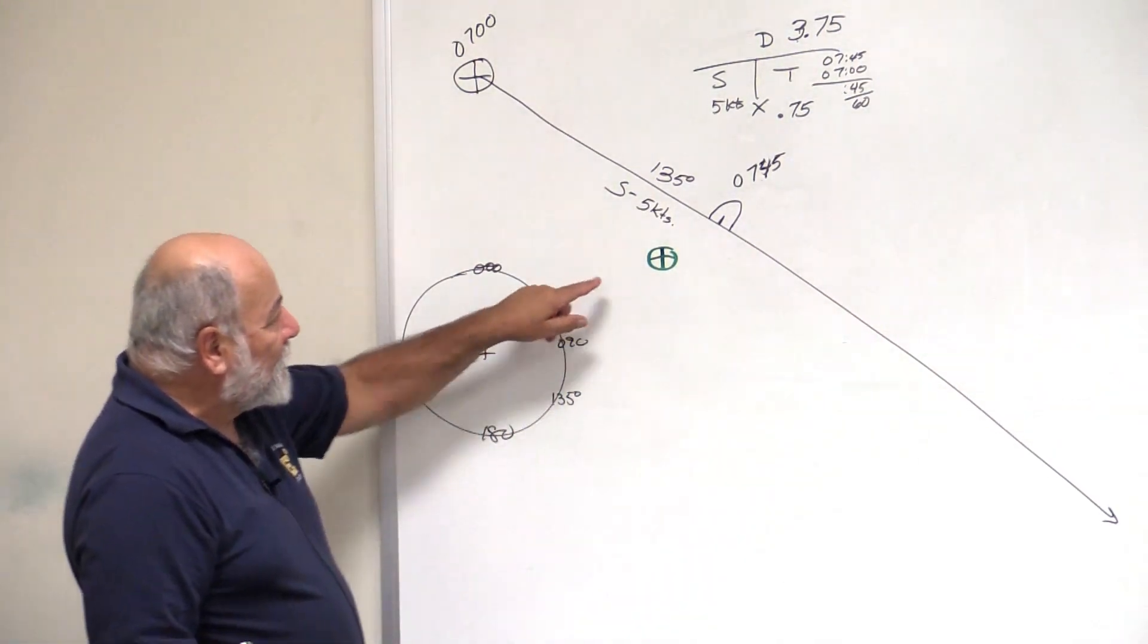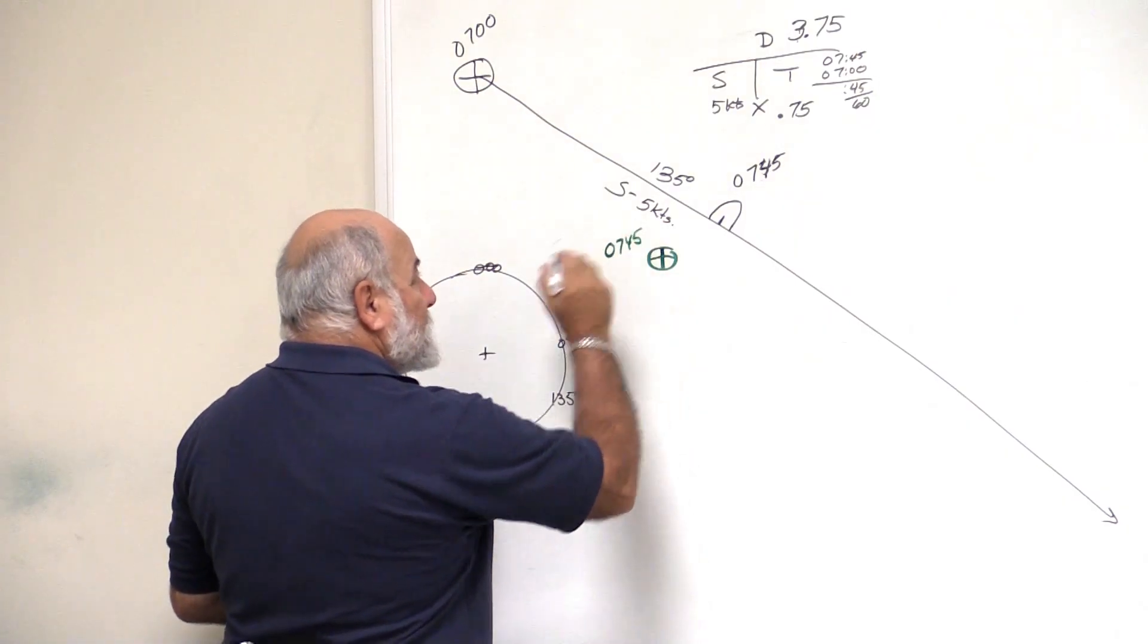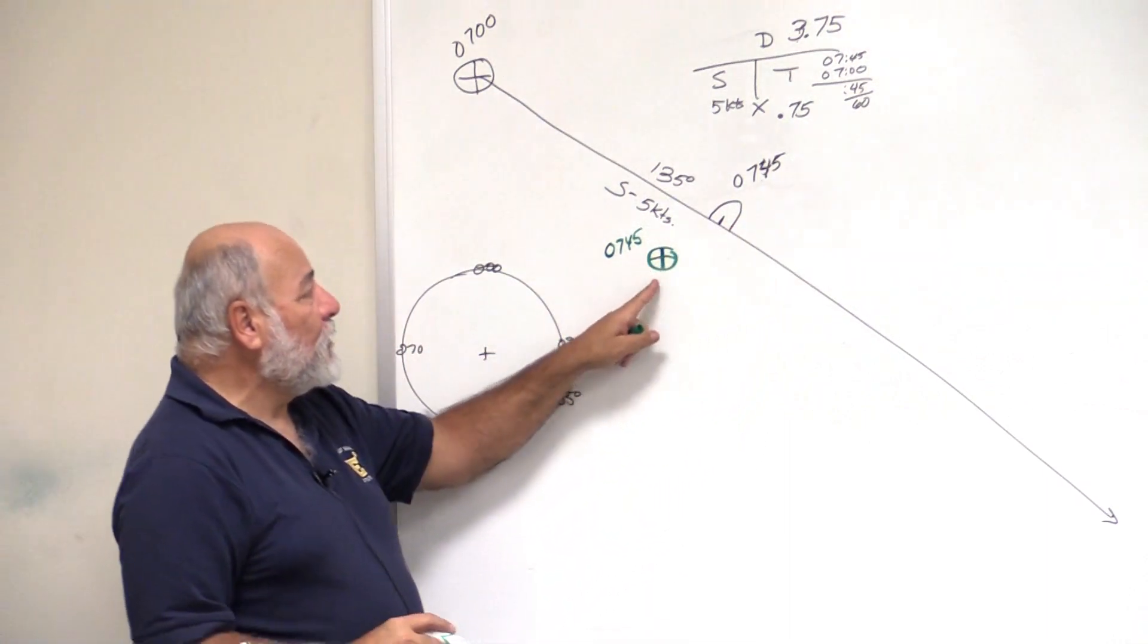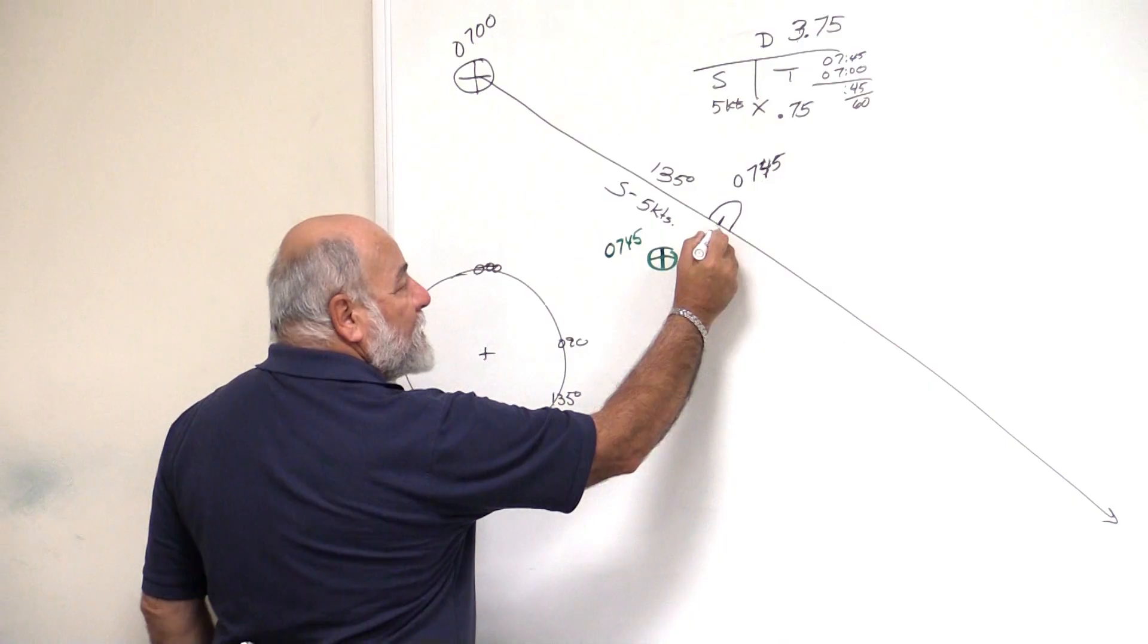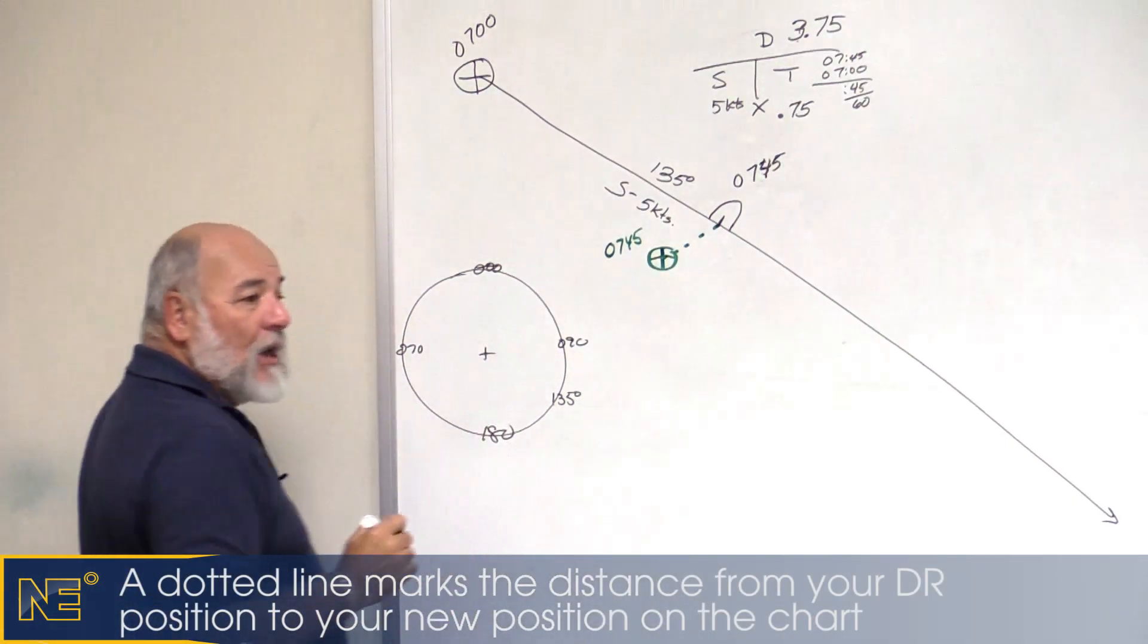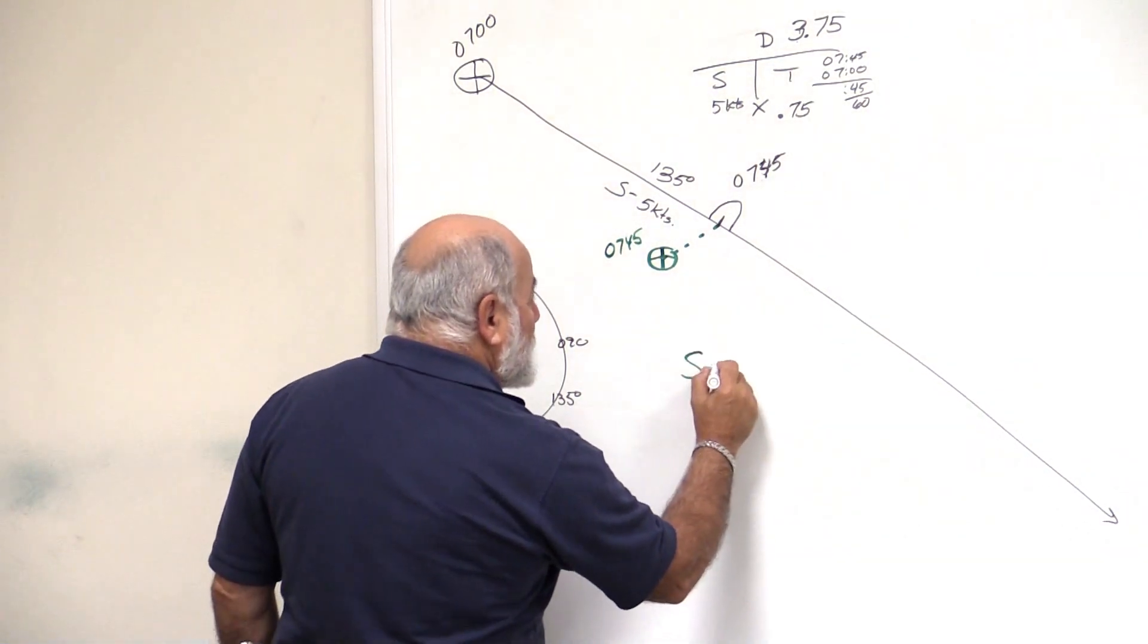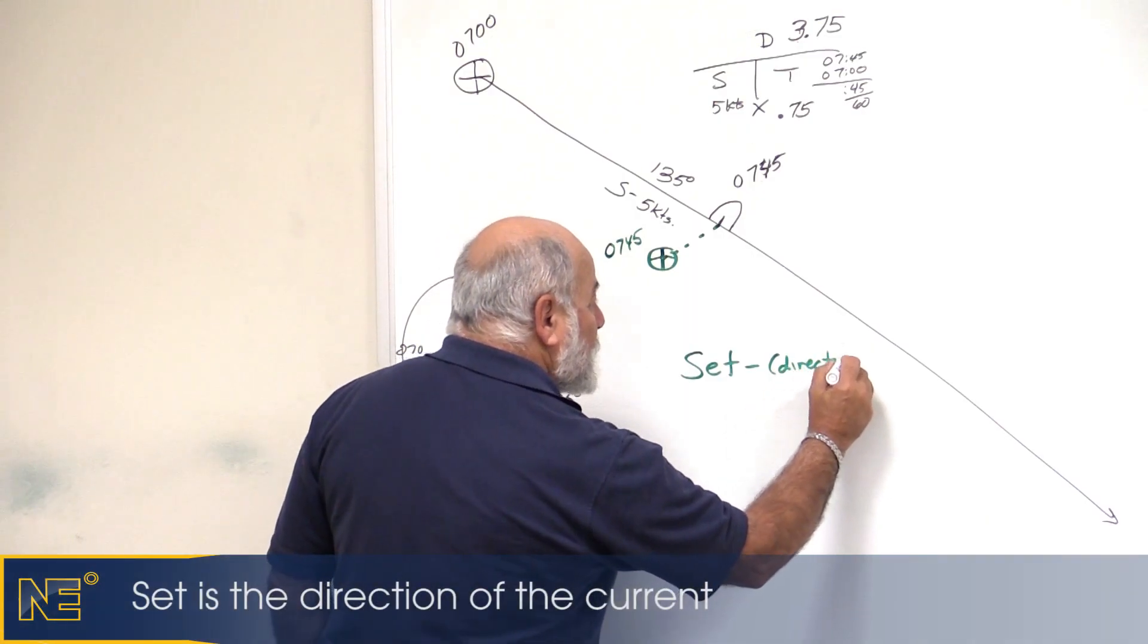This also occurred at 7:45, right? That's where we really are. We reckon we're here, we're really here. So we take and we put a dotted line from our DR position to our new fix. It's a dotted line.